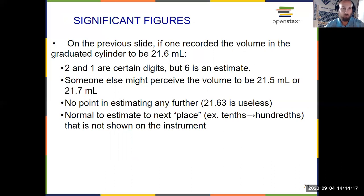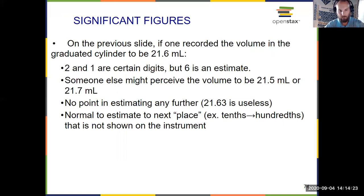If the instrument gave us the ones place, we estimate to the tenths. If we were given the tenths, we estimate to the hundredths. If the instrument gave us the hundredths, we go to the thousandths, and so on. If we were only given the tens — 10, 20, 30 — then we would just estimate the ones digit.